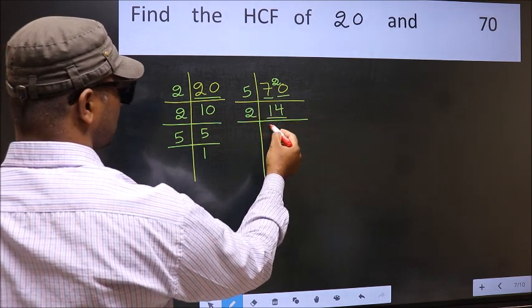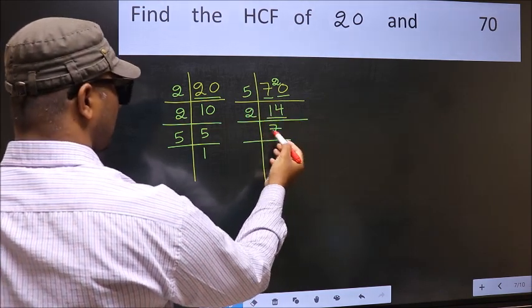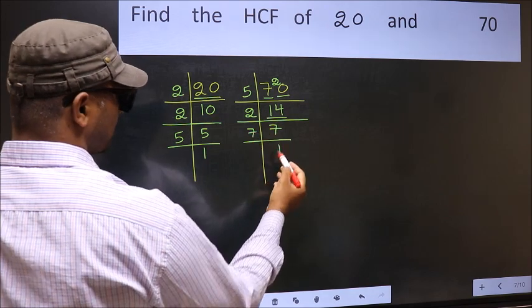Now 14 is 2 sevens. 7 is a prime number, so 7 once 7.